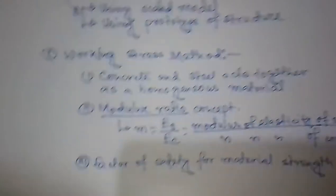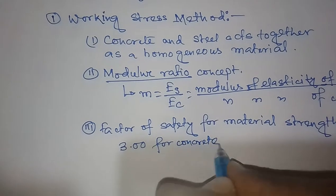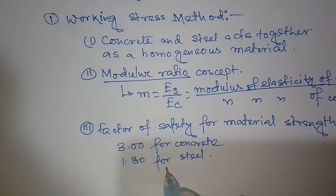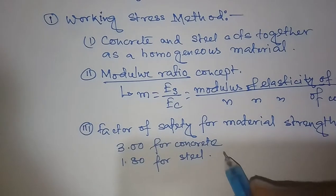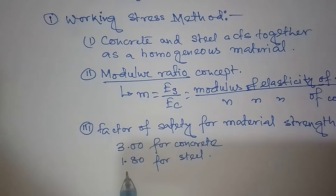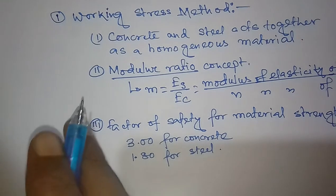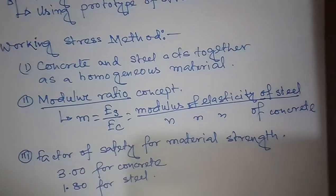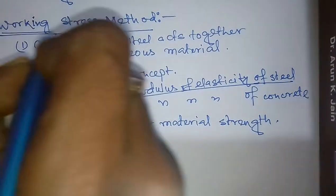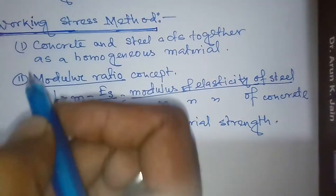The factors of safety are 3.00 for concrete and 1.80 for steel. One may ask why the factor of safety is less for steel. The quality control during manufacture of steel is more precise compared to concrete, so we use a lower factor of safety of 1.80 for steel. The working stress method was the first method to be codified and was the first accepted method used by engineers.